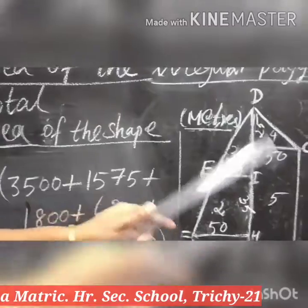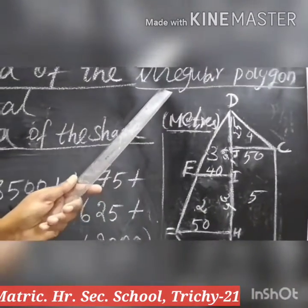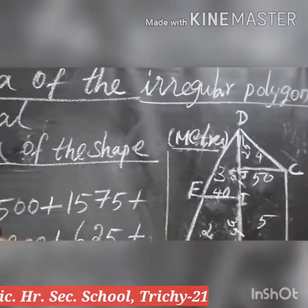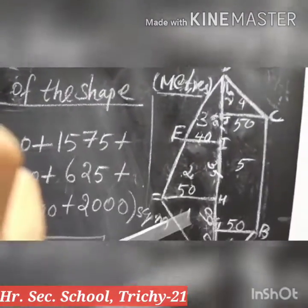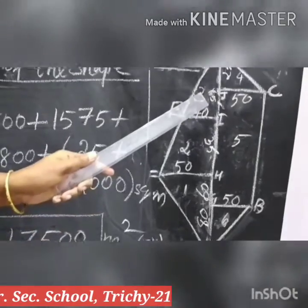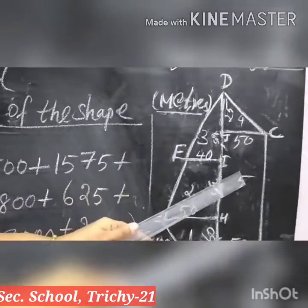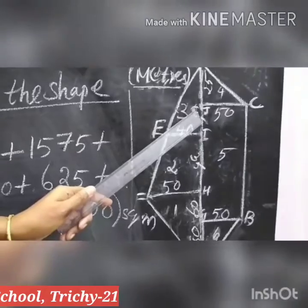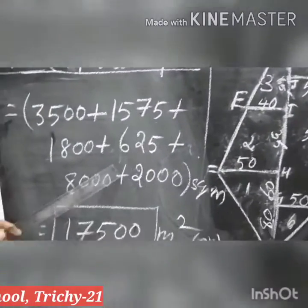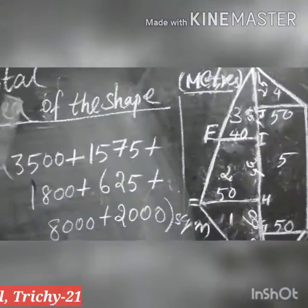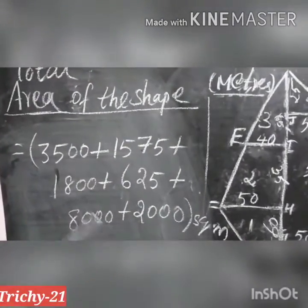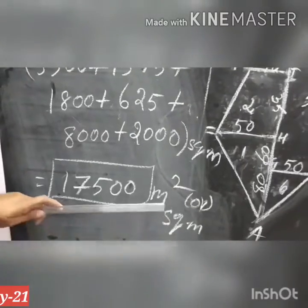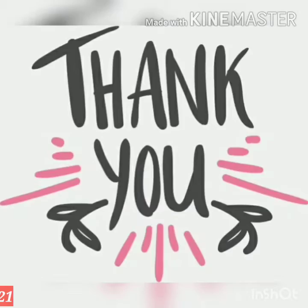So the given shape is an irregular polygon. We don't have the formula for an irregular polygon, so we divided the given shape into 6 regular shapes: first one is triangle, second one is trapezium, third one also triangle, fourth one also triangle, fifth one rectangle, and the last one also triangle. Using the formula for each regular shape, we found the area of each of the 6 shapes. Adding all 6 areas gives a total area of 17,500 square meters. This is the final answer. Thank you students.